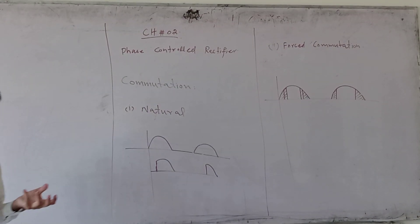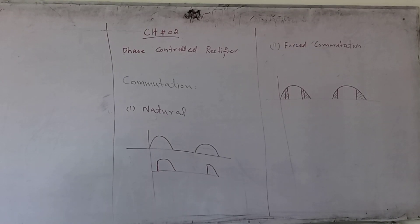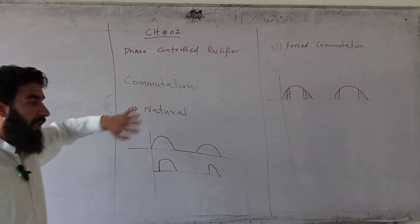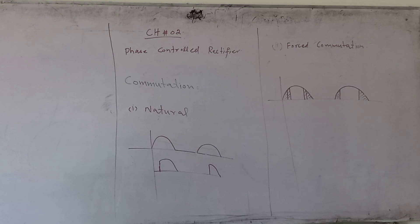Rectification is when AC is converted to DC. There are different methods for this conversion, and we'll discuss commutation.